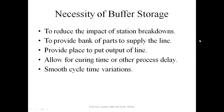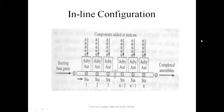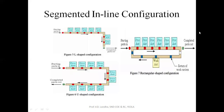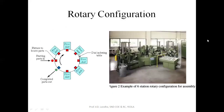The types of buffer storage include: inline configuration, segmented inline configuration — which may have L-shape, U-shape, or rectangle-shape configurations — and lastly, rotary configuration. In most cases, the rotary configuration is considered for production lines.